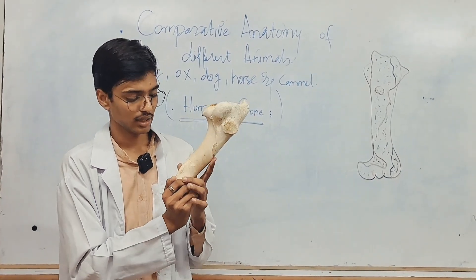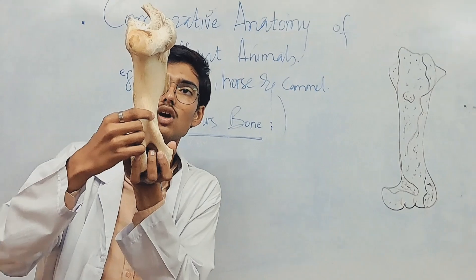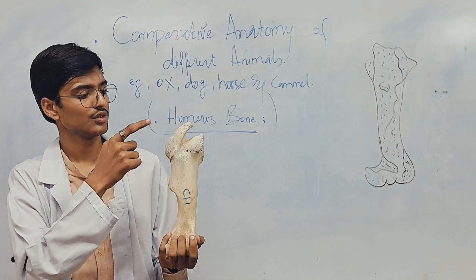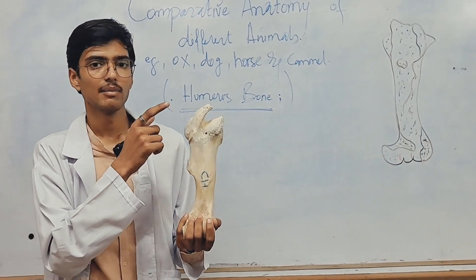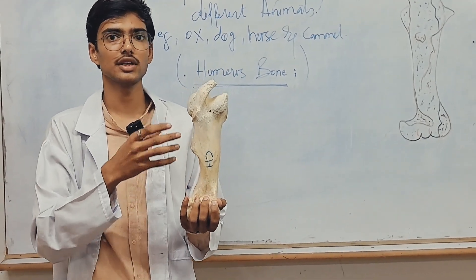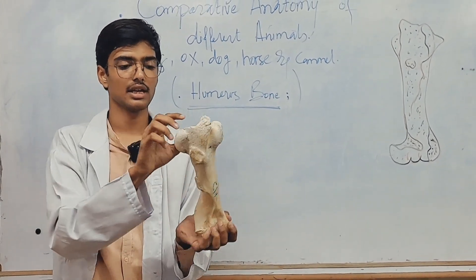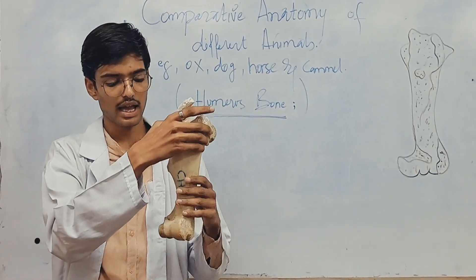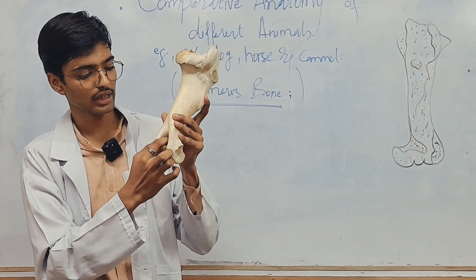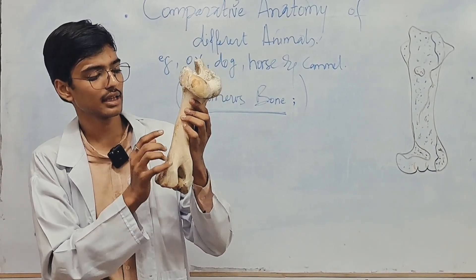The supratrochlear foramen is only present in the dog. And from the caudal view, this is the nutrient foramen of the humerus of ox. To summarize: the humerus can be subdivided into three parts. The proximal extremity is the voluminous part with the humeral head and tubercles. At the distal extremity, there are humeral condyles, radial fossa, and olecranial fossa. And at the shaft, there is the musculospiral groove, deltoid tuberosity, and teres major tuberosity. Thank you very much.